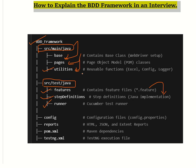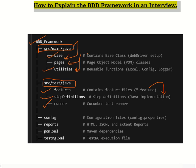The utilities folder contains helper functions like reading configuration files, logging, reports, and API utilities. The base folder contains the base class, which handles opening and closing the browser.